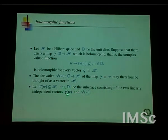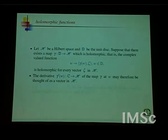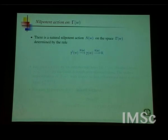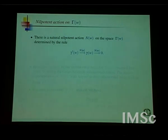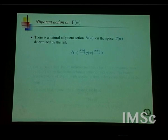One vector is given by γ(ω), the other is γ′(ω). Of course it is a two-dimensional space but it is a parametrized family of two-dimensional spaces. One of the amusing things here is that when you are given two vectors, there is no natural way to order them. You cannot say which one is the first vector and which is the second.